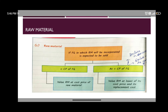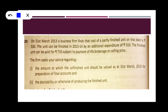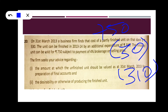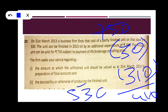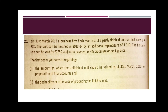The firm wants to know at what amount the unfinished goods shall be valued. We compare NRV and cost: NRV is 410, cost is 530. Cost or NRV, whichever is lower — so 410 is lower. Therefore the partly finished goods are valued at 410 rupees per unit.